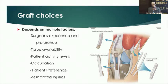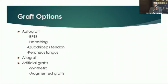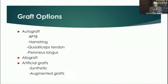Occupation matters too — if there is kneeling involved, a bone patellar tendon graft may be an issue. Patients are very informed today, so patient preference should also be considered. Associated injuries to other ligaments help in choosing the right graft. Available options include autografts — bone patellar tendon, hamstring, quadriceps tendon, and peroneus longus. Allografts and artificials are not covered as they have limited experience and availability in India.